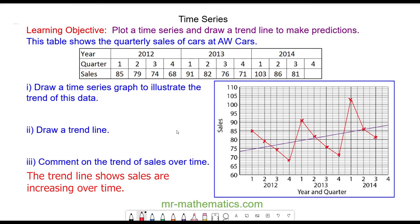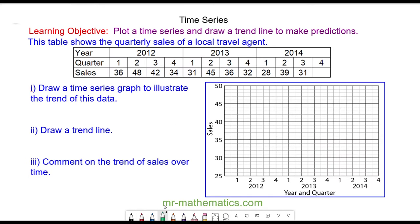Okay let's try one more question. This table shows the quarterly sales of a local travel agent over the course of three years from 2012 to 2014.